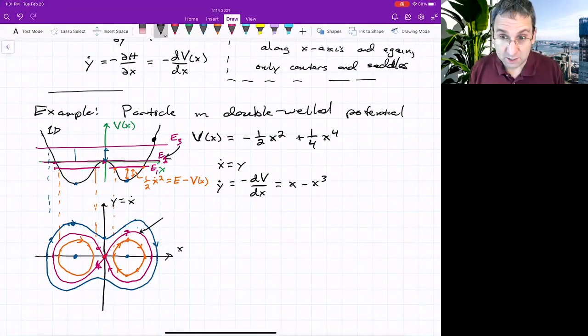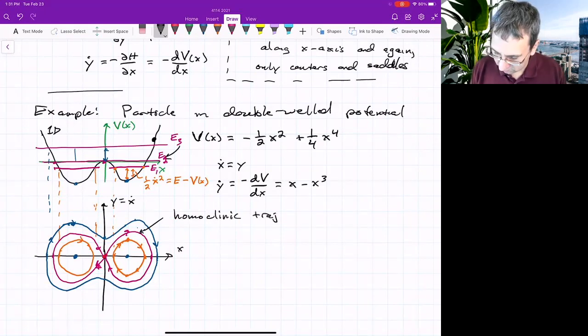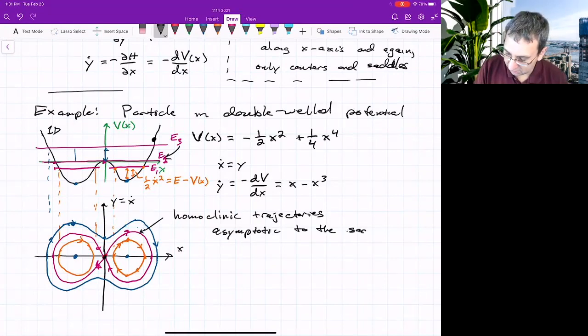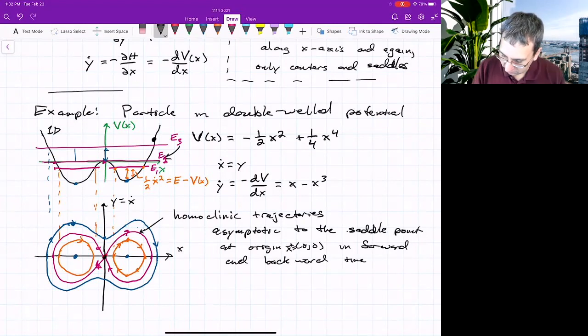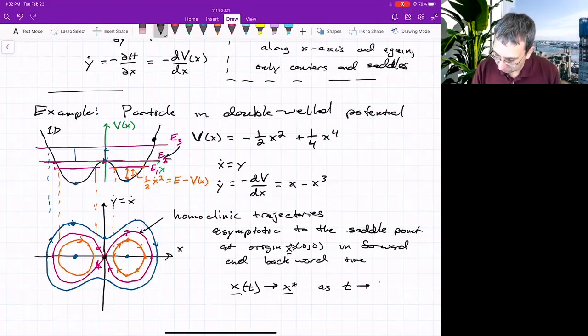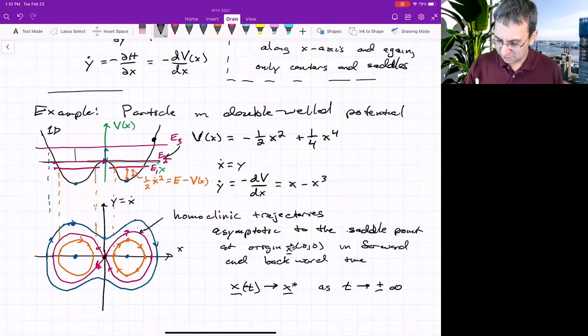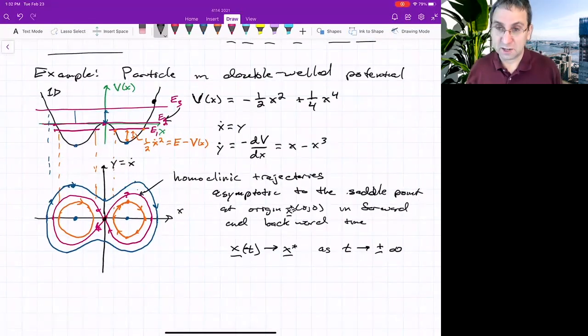But these special trajectories, I don't think we've named them before. They're called homoclinic trajectories. And you might think about what, you know, homo means same. Clinic is kind of like inclined towards. These are trajectories that are inclined to return to, in this case, the neighborhood of the fixed point they started near. They aren't actually connected to the saddle point because it's asymptotic in both forward and backward time. These trajectories are asymptotic to the saddle point, which is at the origin in forward and backward time. If we call this point x star, then the homoclinic trajectory is one that x as a function of time approaches x star as t goes to both plus and minus infinity.